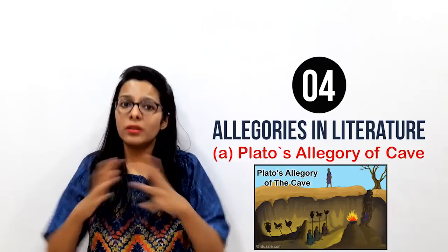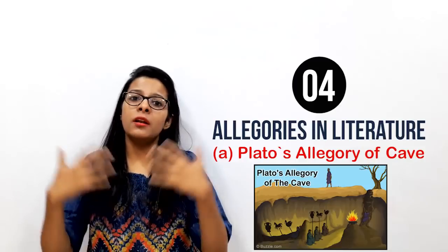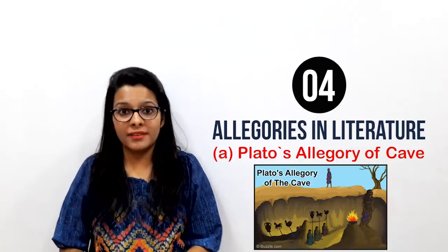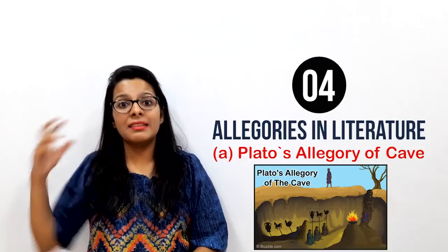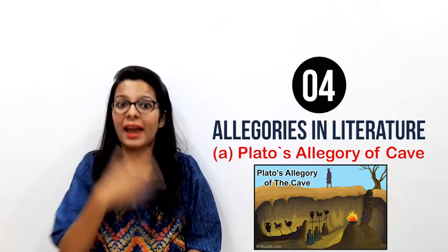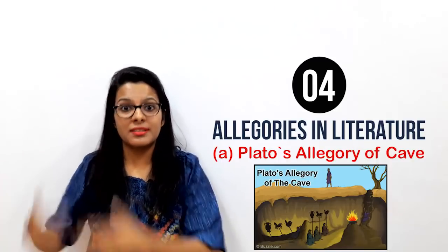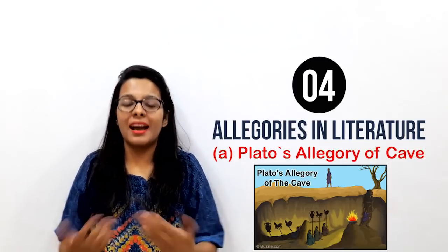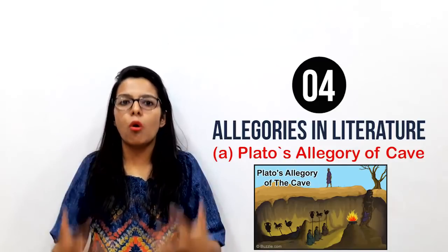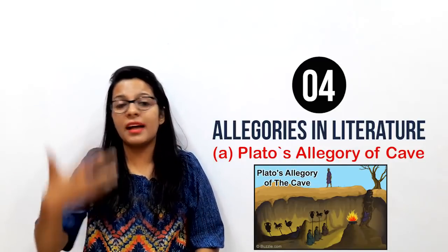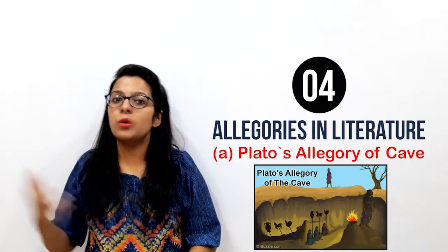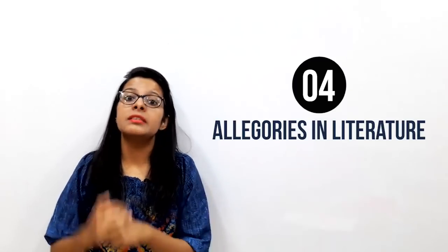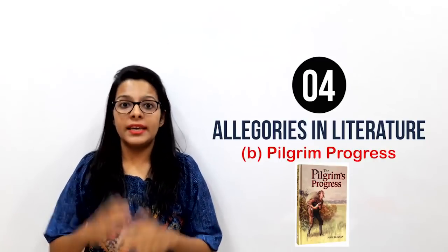Through this allegory, Plato tells us that most people on earth are like those in the cave — they live their entire lives thinking shadows are the truth. Only a few philosophers go out and see the actual truth. But when they return and try to tell others about it, people refuse to believe them. This reflects how human beings are so attached to their own views that they will not listen to others.